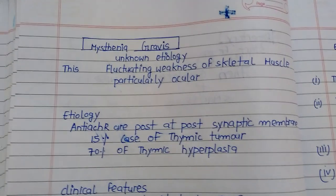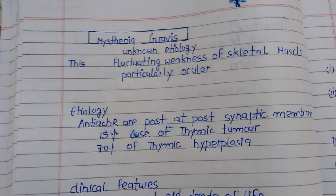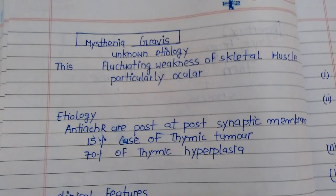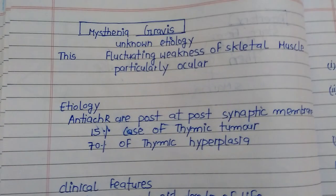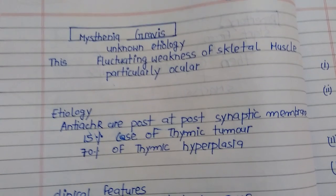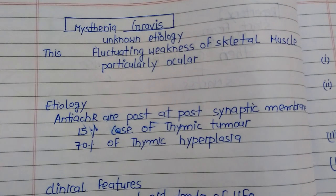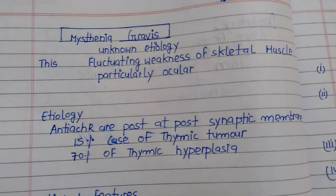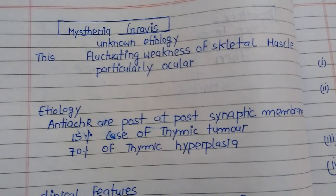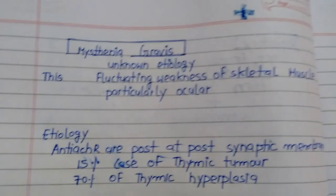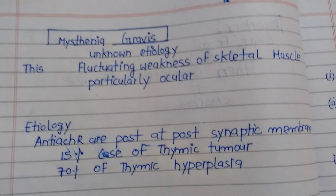Good afternoon friends. Today I want to discuss the most important topic about the nervous system — the disease known as Myasthenia Gravis. Myasthenia Gravis is a kind of autoimmune disease. We don't know exactly why it occurs in the body, but it is a disorder with unknown etiology characterized by fluctuating weakness of skeletal muscles, particularly the ocular muscles and other muscles innervated by cranial nerves, with improvement by cholinergic drugs without any evidence of neural lesions.